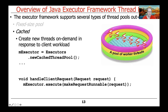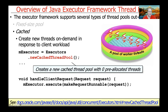Because fixed-size thread pools are not perfect for all use cases, Java supports other kinds of thread pools as well. Another very common approach is called a cached thread pool, or variable-size thread pool. This approach creates new threads on demand as the client workload increases. You create it by calling the factory method newCachedThreadPool, which starts out with zero pre-allocated threads.